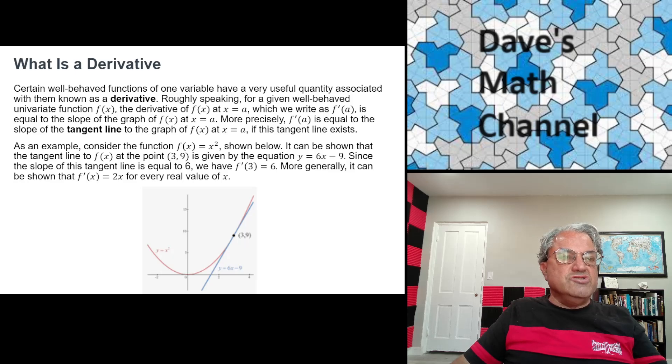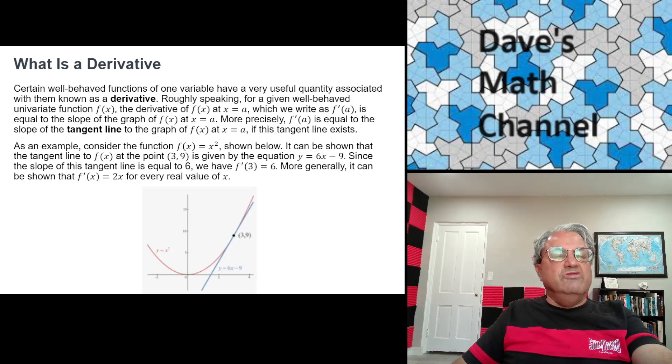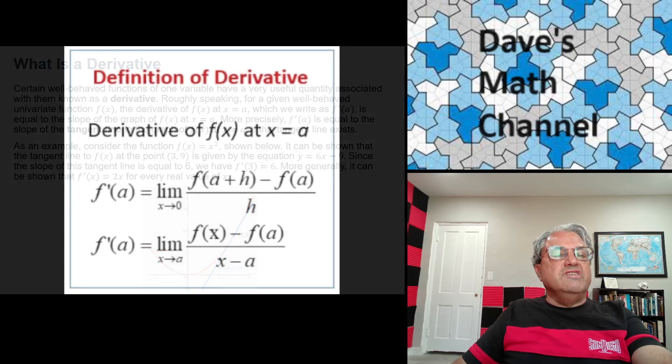It's a line with the same slope of the function at that point. That's kind of the intuitive definition of what a derivative is. It's the slope basically. But we have to define it more precisely than that.